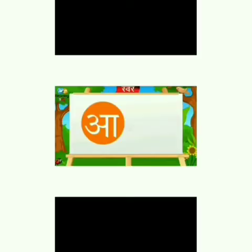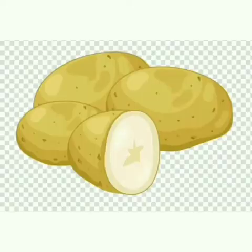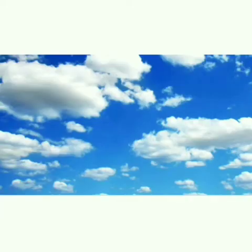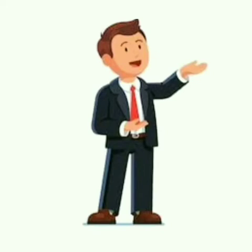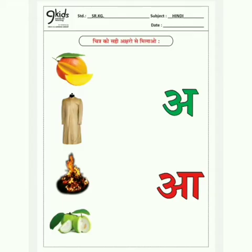Now it's time for swar आ. आ से क्या क्या होता है? आओ देखें। आ से मीठे मीठे और रसीले आम। आ से आम, आ से आलू, आ से आकाश — आकाश में पंछी उड़ते हैं। आ से आदमी — आदमी मतलब man। आ से आवाज़।